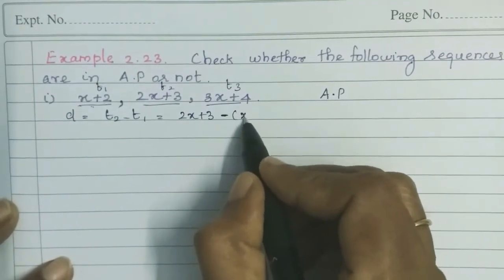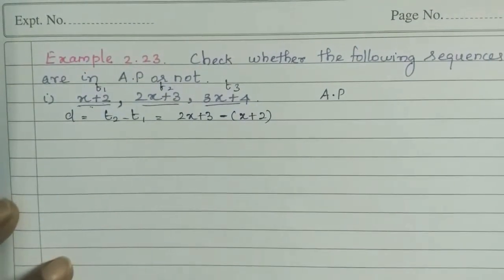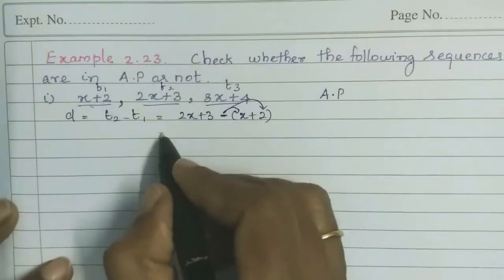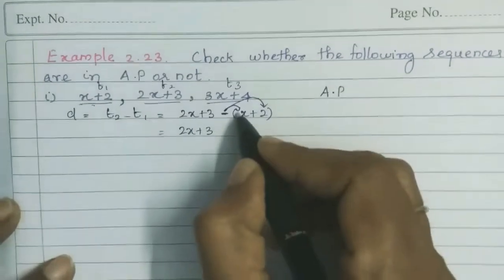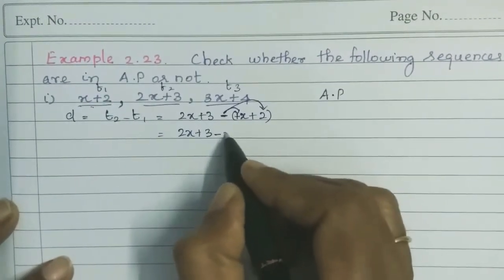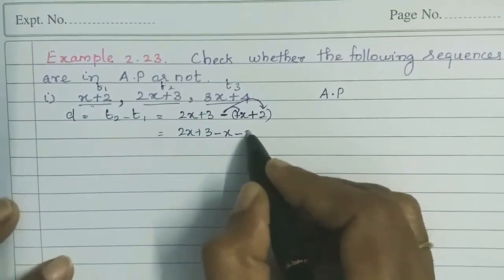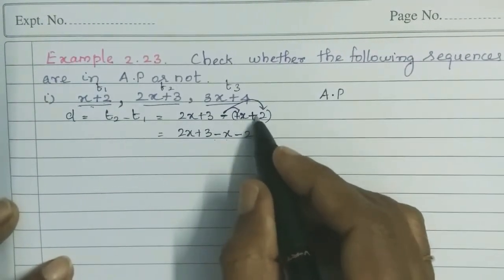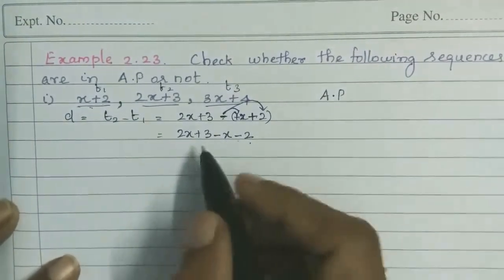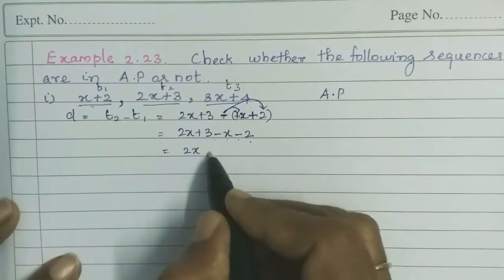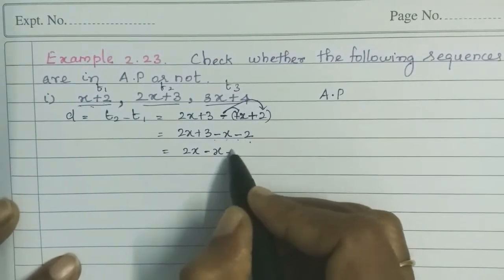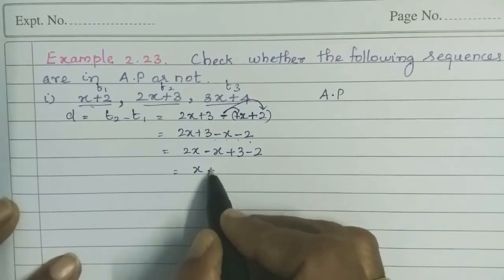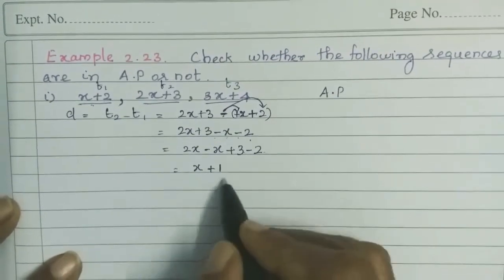Opening the brackets, we get 2x plus 3 minus x minus 2. So 2x minus x is x, plus 3 minus 2 is 1. So x plus 1. That's how it is.